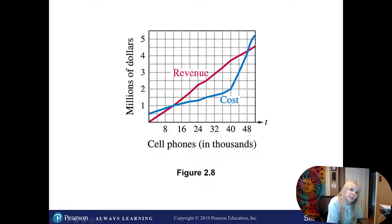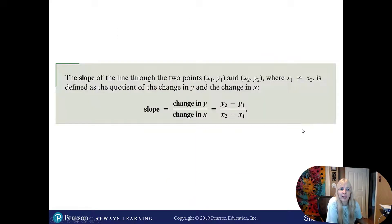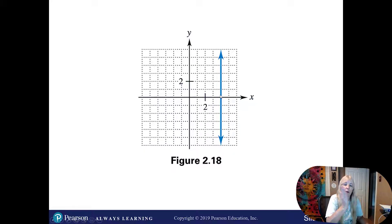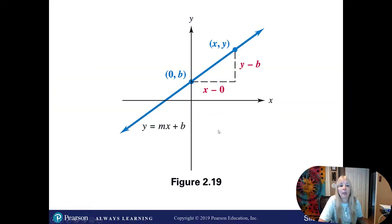Section 2.2 gets more into the actual equations of the graphs. It might be a reminder, might be new for some of you, but maybe a reminder from algebra: how to find the slope of a line. The slope is just the steepness of the line. If you have a horizontal slope, the slope is zero. Vertical slope: undefined.